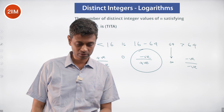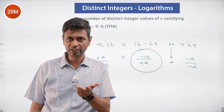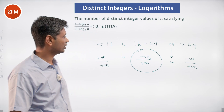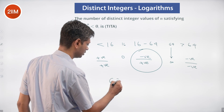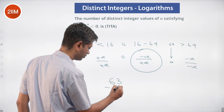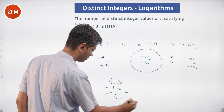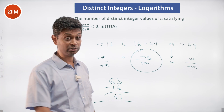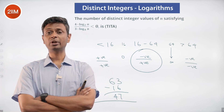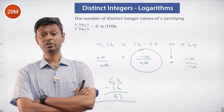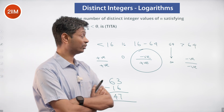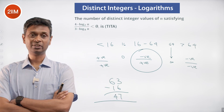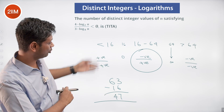That's 17, 18, 19, 20, 21, all the way to 63. The count is: the first 63 natural numbers minus the first 16, which gives 47. To summarize: break into three regions, check signs in each region — it's negative only in the middle interval.